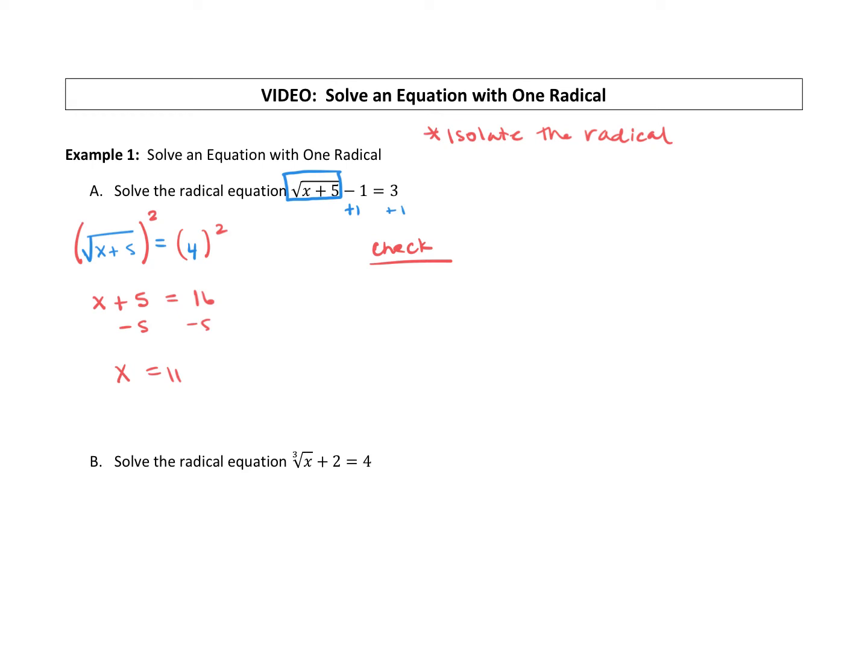So when you check your answer, you're going to go back to the original equation. So I'm going to rewrite, we've got, we're checking to see, does x equal 11? That's what we're checking. So we've got the square root of, I'm going to plug that 11 in for the x. So 11 plus five, we've got a minus one equals three. I'm going to put a little question mark above the equal sign. We want to know if that equals three.